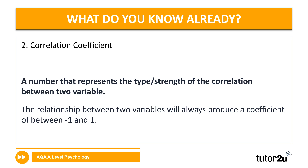Then we've got correlation coefficient. The correlation coefficient is a value or a number that tells us the strength of our correlation and also the type of correlation that we have. So the correlation coefficient will be a value between minus one and plus one.